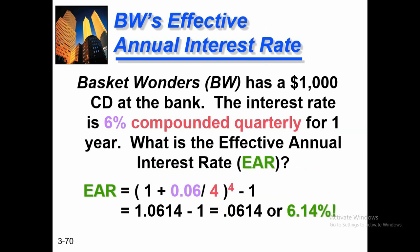Here is a simple example: Basket Wonders (BW) has a $1,000 certificate of deposit (CD) at the bank with an interest rate of 6% compounded quarterly. What is the effective annual rate? EAR equals (1 plus 0.06 divided by 4) raised to the power 4, minus 1. This gives us an effective annual interest rate of 6.14%.